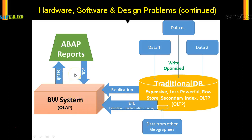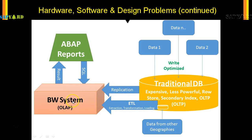But this whole design itself had some flaws, as you can see with this arrow. The replication and ETL across different geographies meant the same data existing in the traditional database needed to be replicated to the Business Warehouse system, causing data duplicacy.